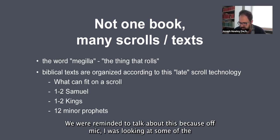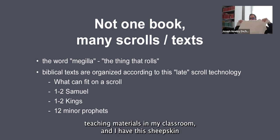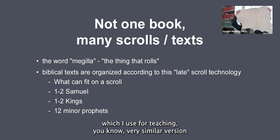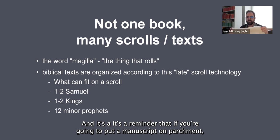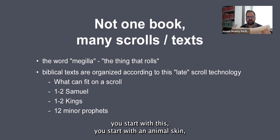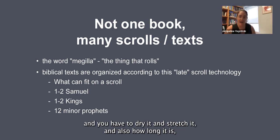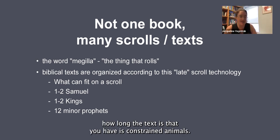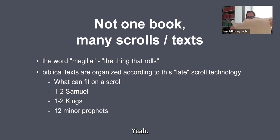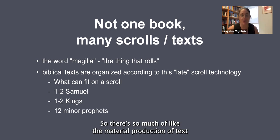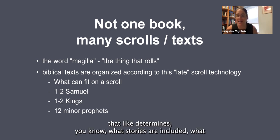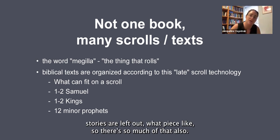We were reminded to talk about this because I have a sheepskin in my classroom, which I use for teaching a very similar version of what you're talking about. It's a reminder that if you're going to put a manuscript on parchment, you start with an animal skin — you have to clean it, dry it, and stretch it. How long the text is that you have is constrained by how many animals you have and whether you have the ability to stitch them together. There's so much material production of text that determines what stories are included, what stories are left out.